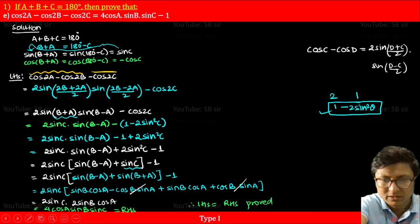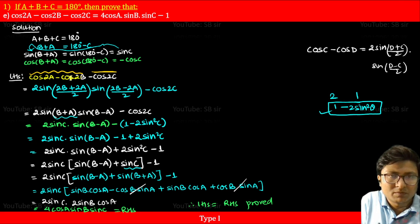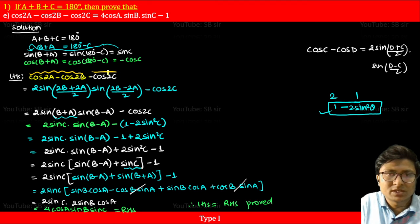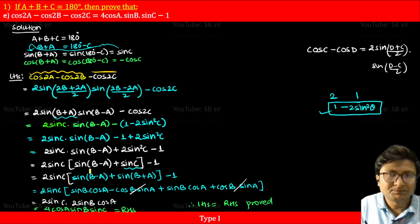To summarize what we did: we applied the cos C minus cos D formula, waited for simplified terms, then changed cos 2c to 1 minus 2 sin² c to match the sin c factor. We factored out 2 sin c, then used the given condition sin c equals sin(b plus a), and finally applied the compound angle formula to complete the proof.